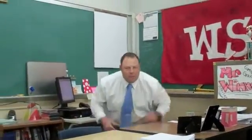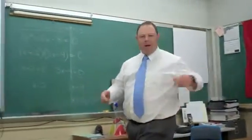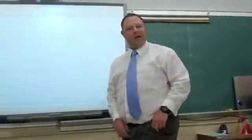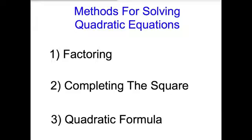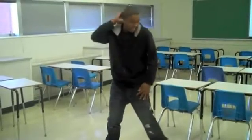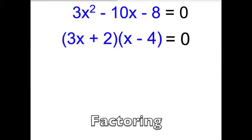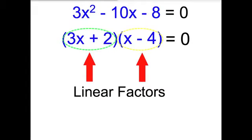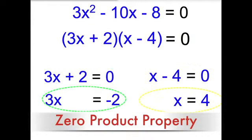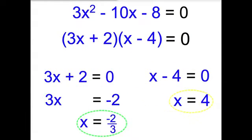Everybody listen. Pay attention, class. We're about to solve quads so that y'all can pass. We'll teach you three methods. X is what we're after. Start off first — teach me how to factor. If factor won't work for you, we'll go down our list. Just break it down into two quantities, they're linear factors. We solve them with ease. The zero product property comes into effect. Each piece should equal zero, and then you solve for x.